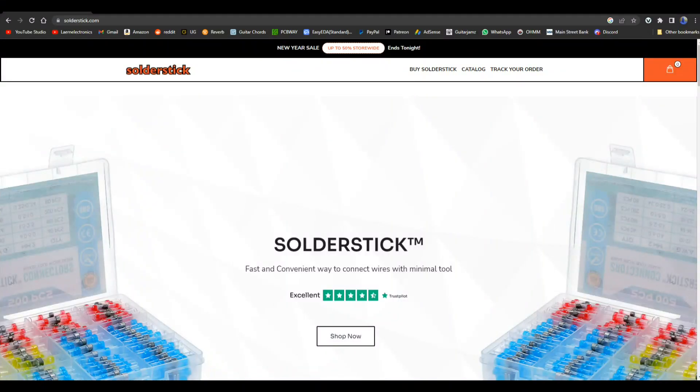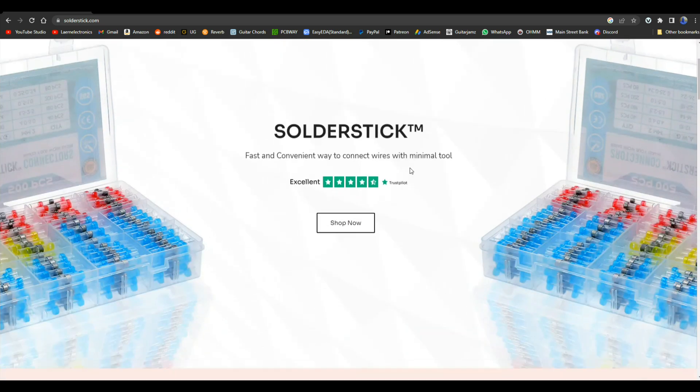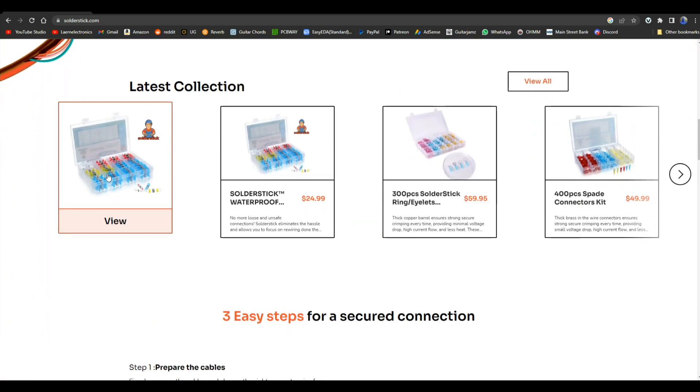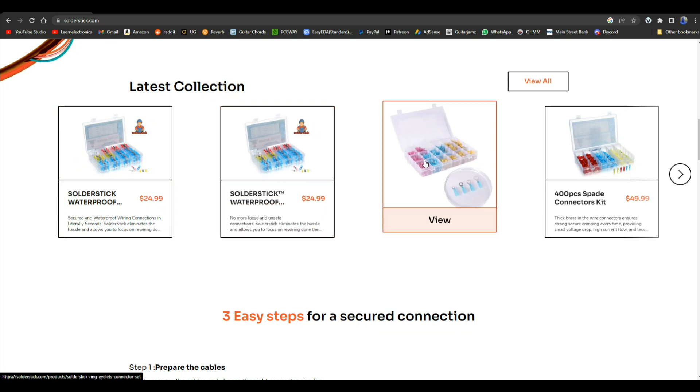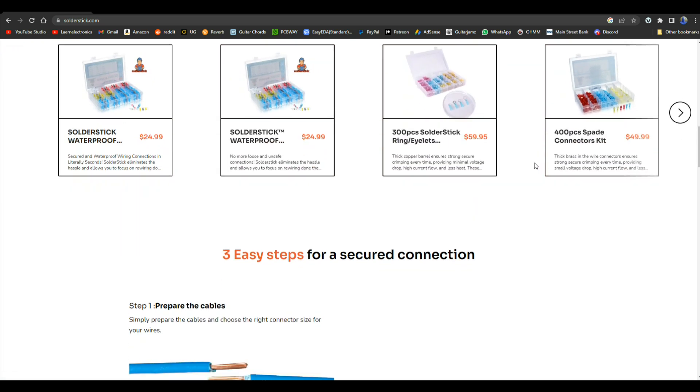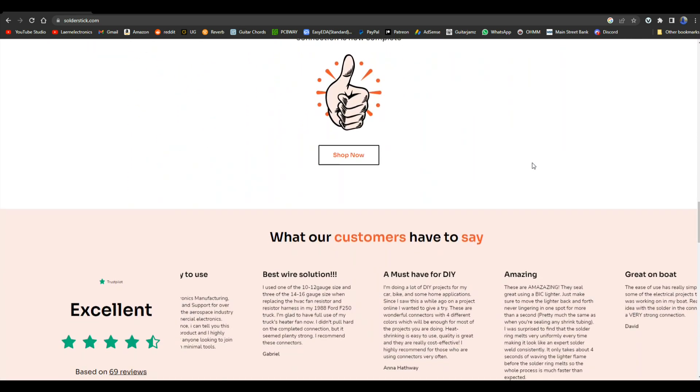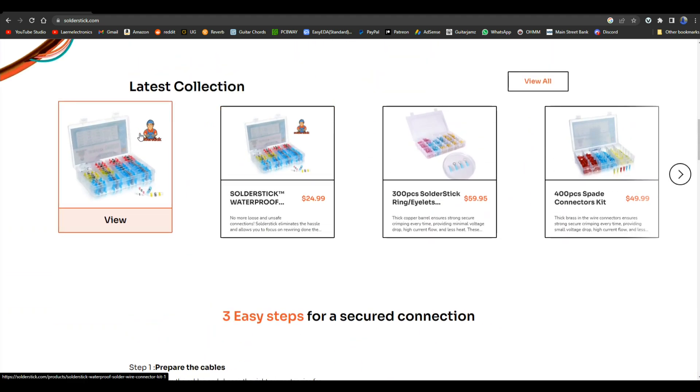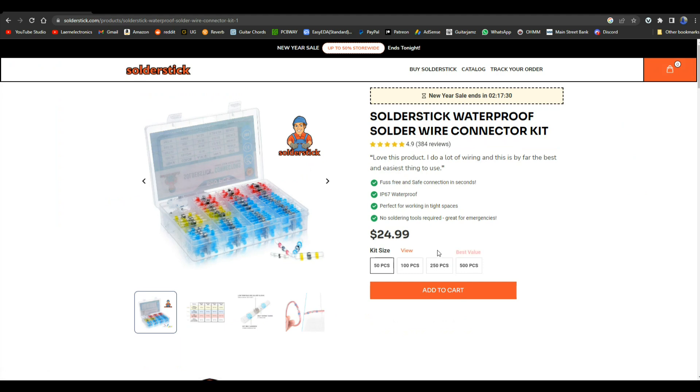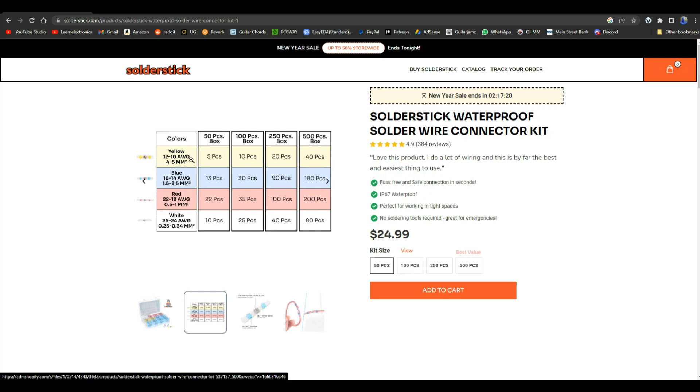So like I said earlier in the video, it is sponsored by SolderStick. And SolderStick has a whole lot of products that are great. They have the solderless butt connectors. They have rings and eyelets and spade connectors. Complete instructions on how to apply them on the website. And they are a good price. $24.99. Unless you're a mechanic using these every day, that box is probably enough to last you for the rest of your life. Covering everything you can see from 10 gauge all the way up to 24 gauge.